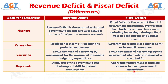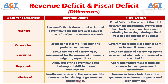Difference number 5: Revenue deficit signals insufficiency of funds in the hands of the government to finance the operations of government departments or agencies. On the other hand, fiscal deficit signals an increase in future liabilities of the government on interest payment and loan repayment.